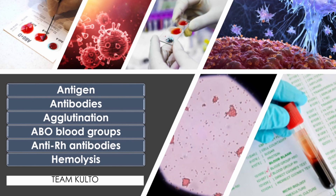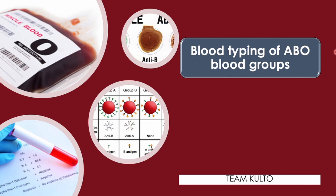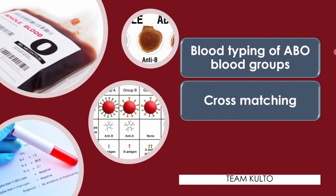Blood typing of ABO blood groups: when serum containing anti-A or anti-B antibodies is added to a blood sample diluted with saline, agglutination will occur between the antibody and the corresponding antigen. Cross matching involves testing for agglutination of donor RBCs by the recipient serum, and of the recipient's RBCs by the donor serum. Typing for Rh factors is done in the same manner as ABO blood typing.